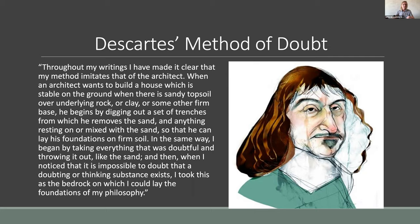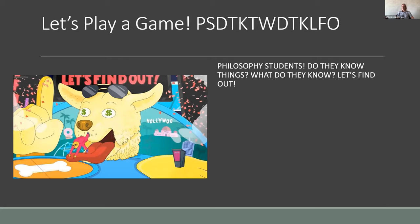Descartes writes: 'My method imitates that of the architect. When an architect wants to build a house on ground where there's only sandy topsoil over underlying rock or clay, he begins by digging out trenches, removing the sand, so he can lay his foundations in firm soil. In the same way, I began by taking everything that was doubtful and throwing it out like sand, and then when I noticed it was impossible to doubt that a doubting or thinking substance exists, I took this as the bedrock upon which to lay the foundations of my philosophy.'